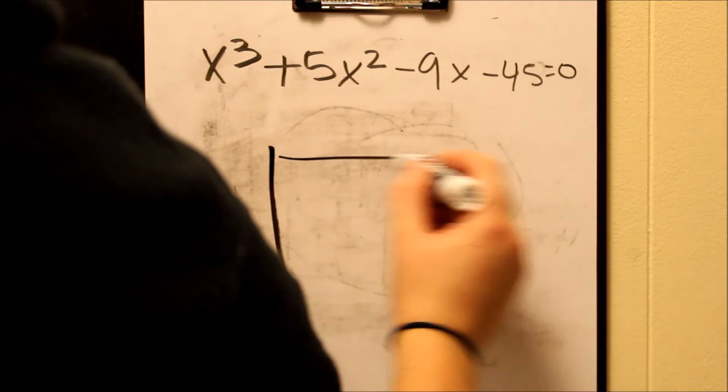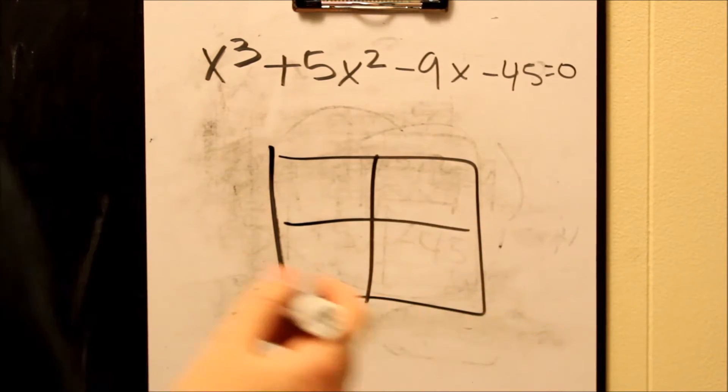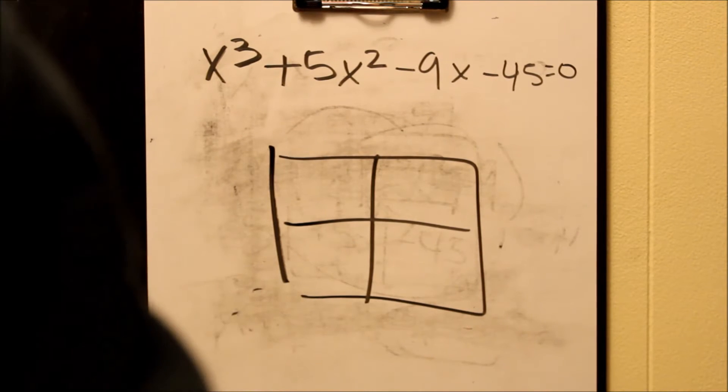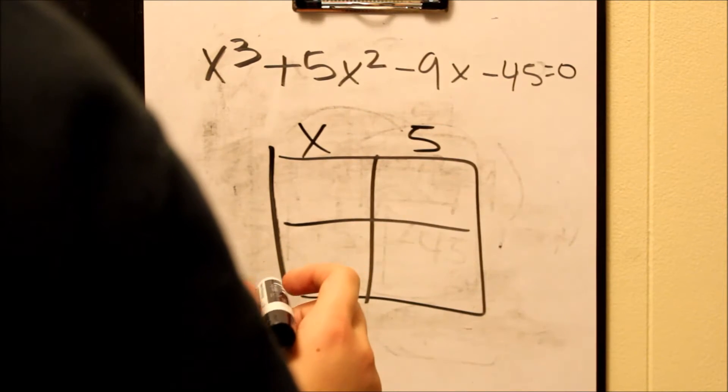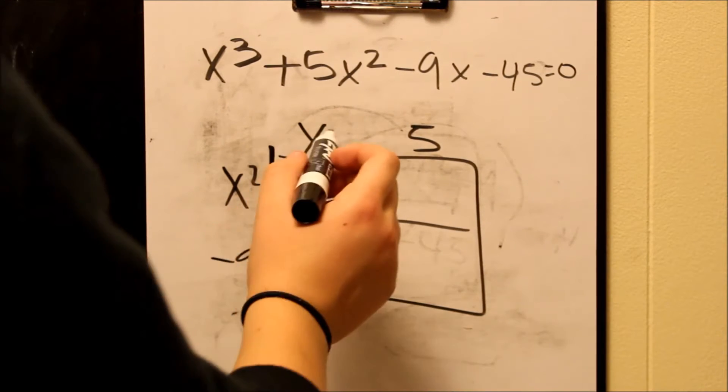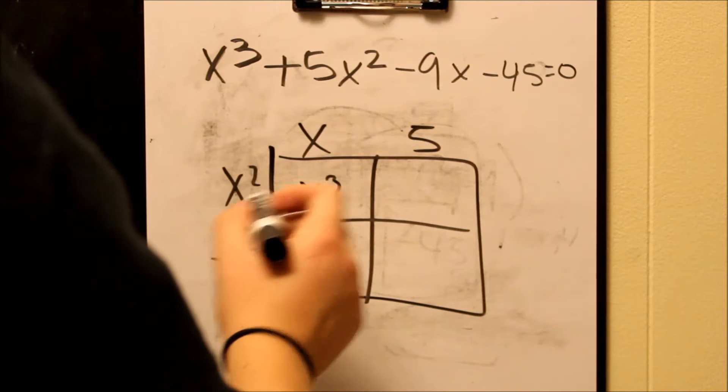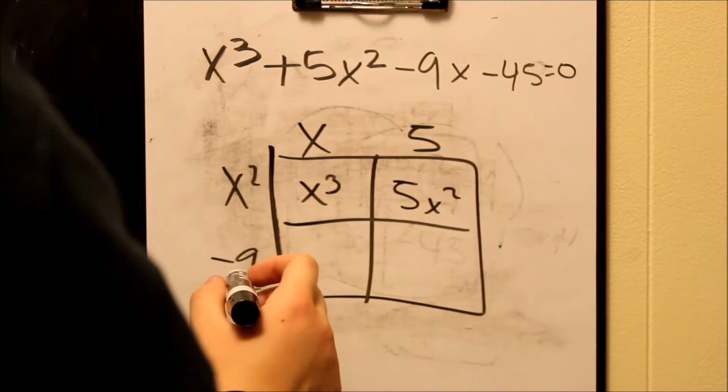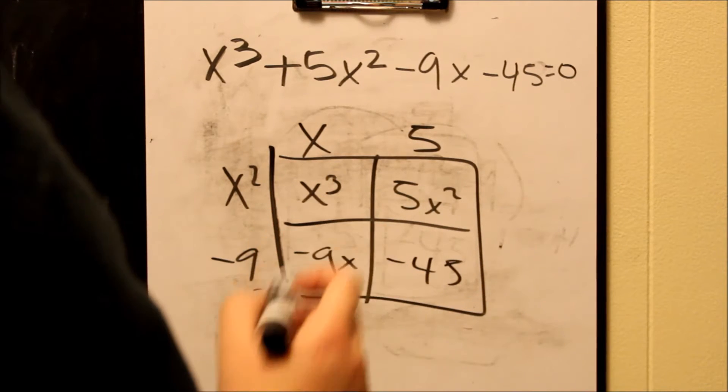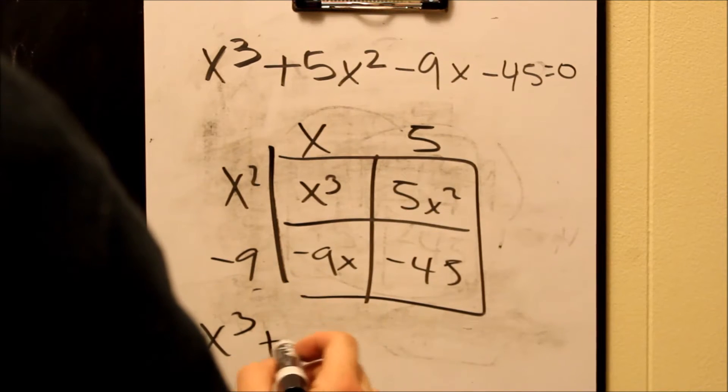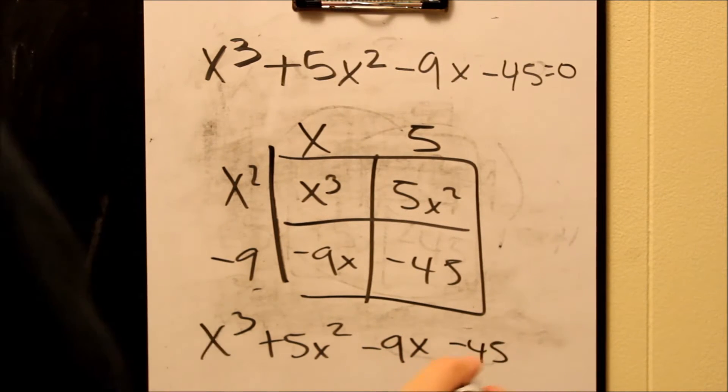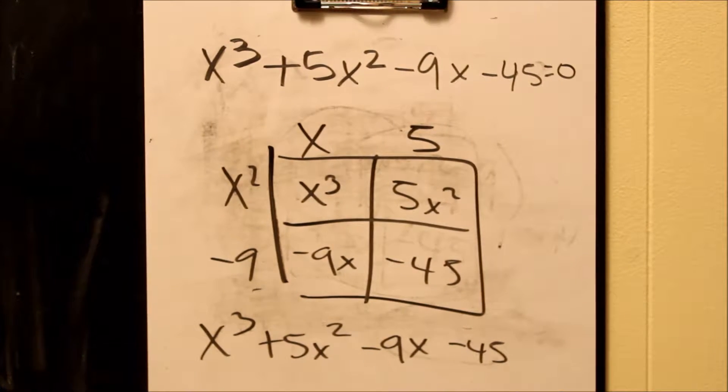And then we can also do the box method. So what you do for this, you just make a box, split it into 4 equal parts. It doesn't have to be equal, but it makes it easier. And then we can just put the factors on the side. So we have the x plus 5 on the top. The x squared minus 9 on the side, the left side. And then you just do x times x squared equals x cubed. And then x squared times 5, 5x squared. x times negative 9 is negative 9x. And negative 9 times 5 equals negative 45. And again, we can write this out into the original form by just writing out what we have in the boxes. So x cubed plus 5x squared minus 9x minus 45. And look at that, we factored that correctly. Go us.